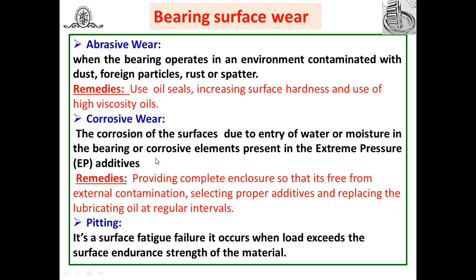The second type of surface wear is corrosive wear — surface wear caused by corrosion. In rolling contact bearings, this occurs due to entry of water or moisture, which creates an oxidizing or corrosive environment. Extreme pressure additives used in lubricating oil contain oxide content, and combined with moisture entry, can cause oxidation or corrosion of the bearing surface.